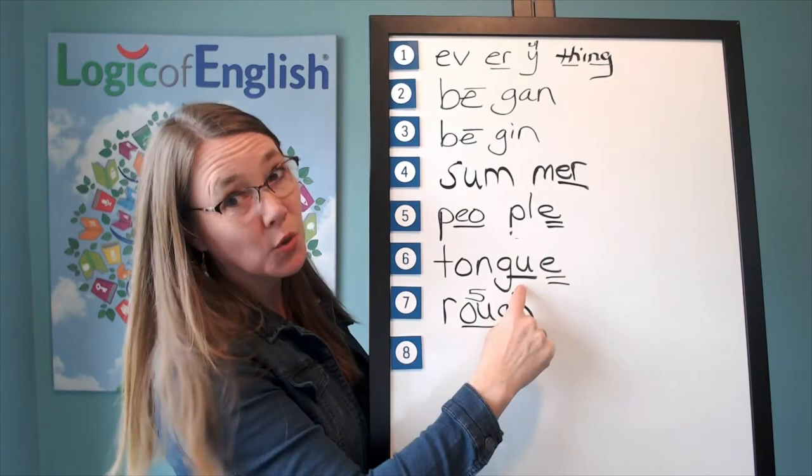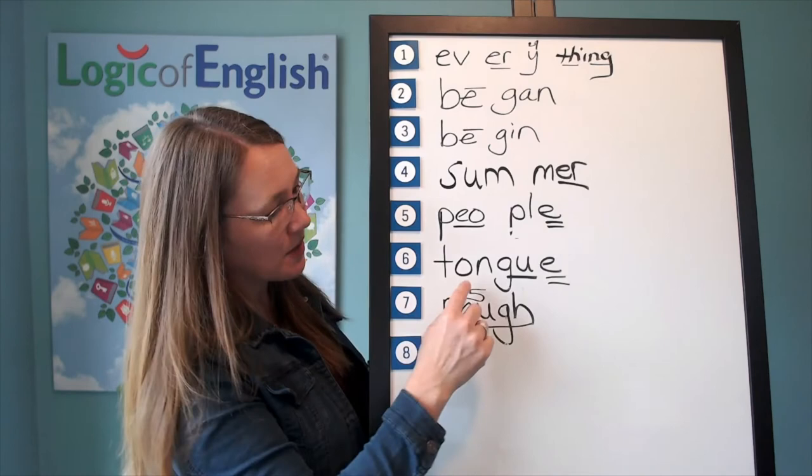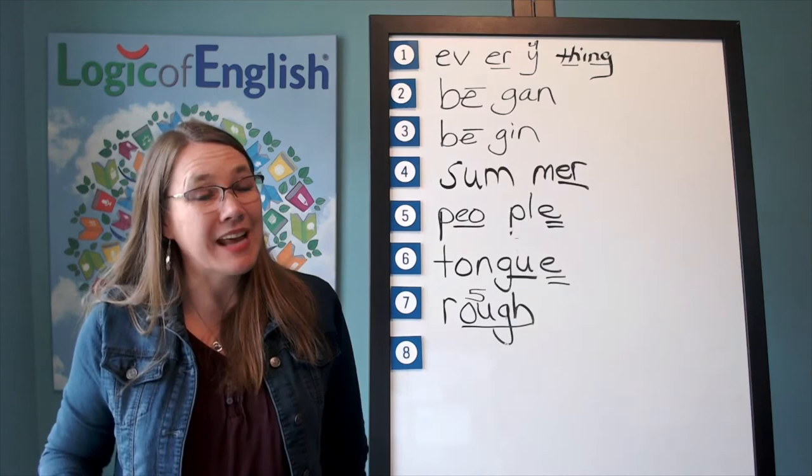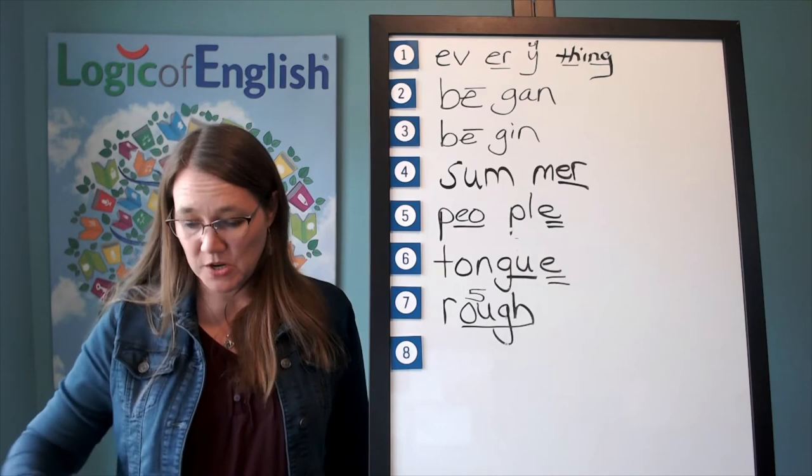I just realized I made a mistake. This says guh-guh, and I think I inverted the sounds for a moment. We don't put a two over it because it says guh-guh. Do you ever make mistakes like that? Even I sometimes make mistakes or momentarily forget something. It's just part of learning. It's okay.